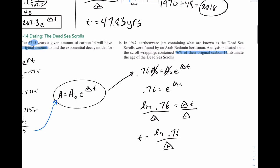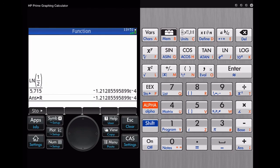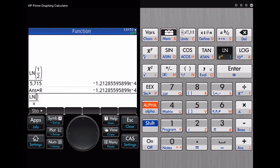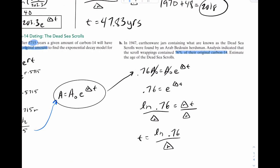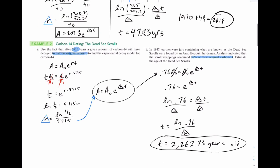So now we're going to go to our calculator. Type it in. Fraction, natural log 0.76, divide that by R. There it is. 2262.73. 2262.73 years old. And we are done.